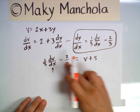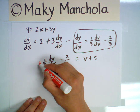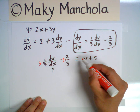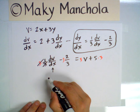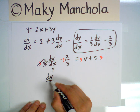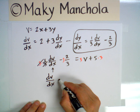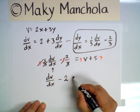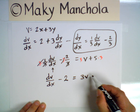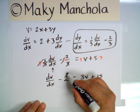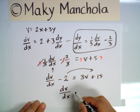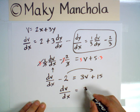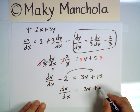Let's do a bit of algebra. Multiply both sides by 3 to clear the fractions. That gives dv/dx minus 2 equals 3v plus 15. Moving the 2 over, we get dv/dx equals 3v plus 17. Now we separate the variables.